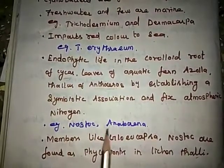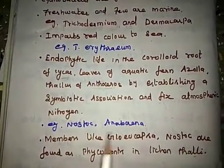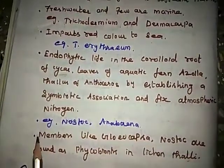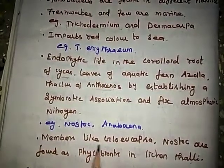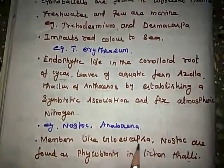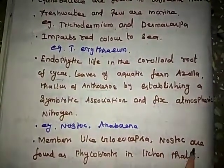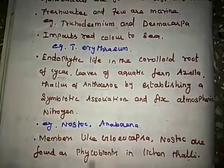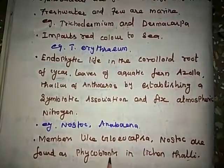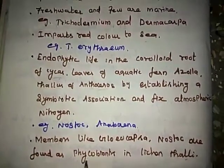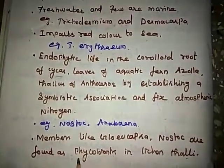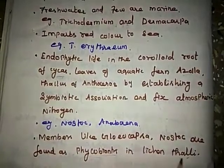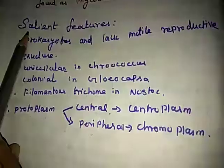By forming a symbiotic association, they fix atmospheric nitrogen. For example, Nostoc and Anabaena. Many members like Gloeocapsa and Nostoc are found as phycobionts in lichen thalli. Phycobiont means the algal partner in the lichen thallus.